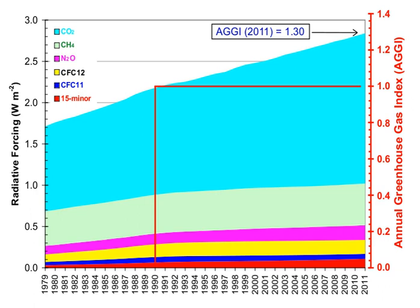Annual per capita emissions in the industrialized countries are typically as much as ten times the average in developing countries. Due to China's fast economic development, its annual per capita emissions are quickly approaching the levels of those in the Annex I group of the Kyoto Protocol. Other countries with fast-growing emissions are South Korea, Iran, and Australia, which now has the highest per capita emission rate in the world. Annual per capita emissions of the EU-15 and the US are gradually decreasing over time.